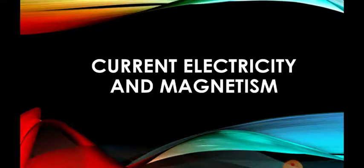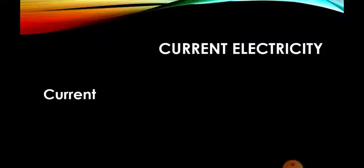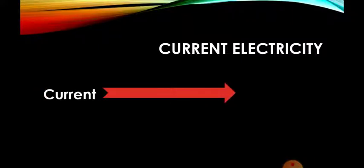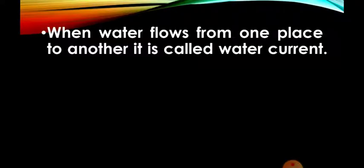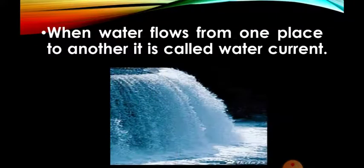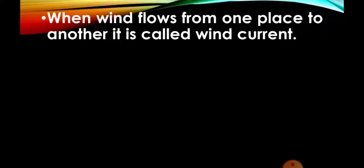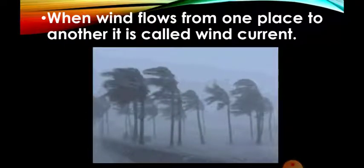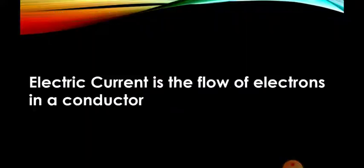Welcome back to current electricity and magnetism. Let us see what is meant by current and how it is generated. The word current simply means flow. When water flows from one place to another it is called water current; when wind flows it is called wind current. So electric current is simply defined as the flow of electrons in a conductor.